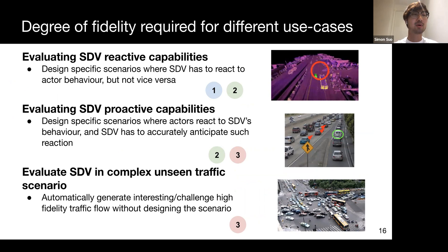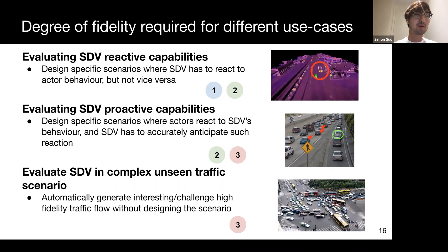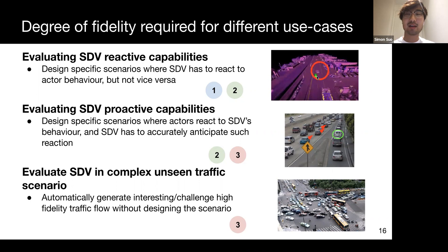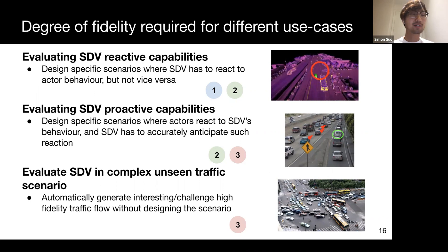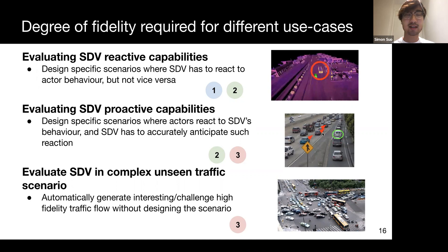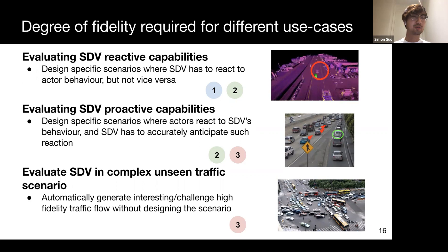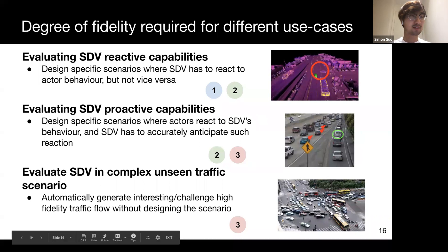Different use cases of the simulation system require different degrees of fidelity. When evaluating an SDV's reactive capability, it may be sufficient to specify fixed trajectories for actors of interest since they don't need to react to the SDV. But for evaluating the SDV's proactive capabilities—for example, merging onto a high-density highway—we need to model how actors will react to the SDV. And to evaluate SDVs in general complex traffic situations without handcrafting scenarios, we need the highest-fidelity actors and interaction understanding to automatically generate interesting traffic flows.